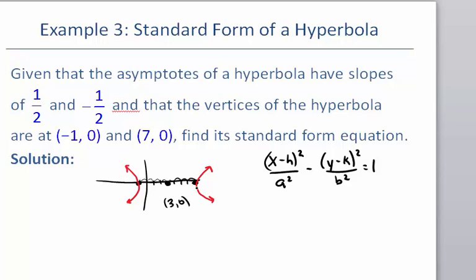I'm going to fill that in in my equation. In place of h, I'm going to put a 3, so this will become x minus 3. And in place of k, I'm going to put a 0.